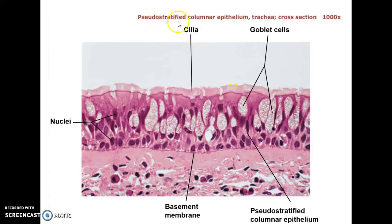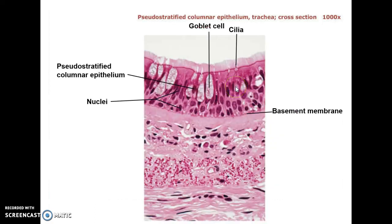So that's pseudostratified columnar epithelium in the lining of the trachea. Here's another view of the same thing — nice columnar cells, the little basal cells down here on the bottom, and the cilia on the surface.